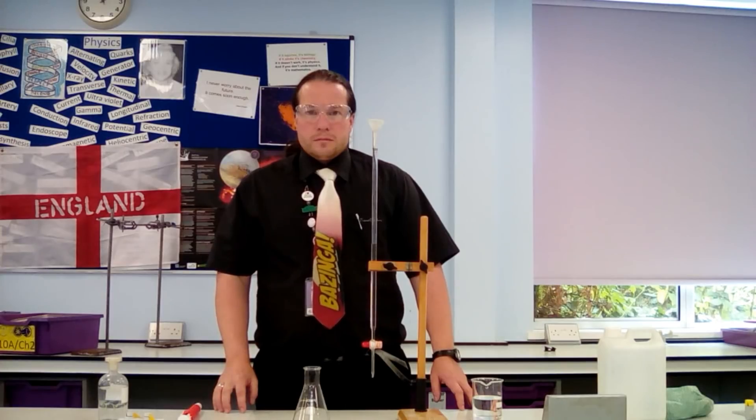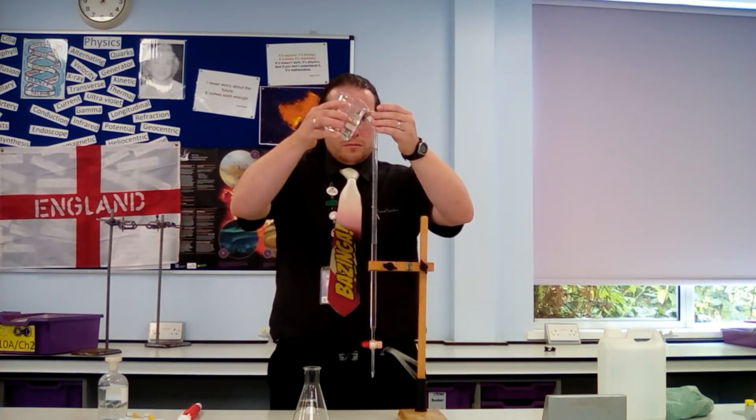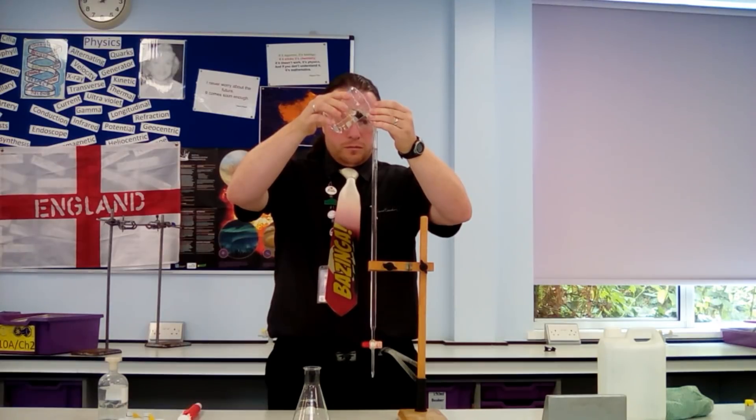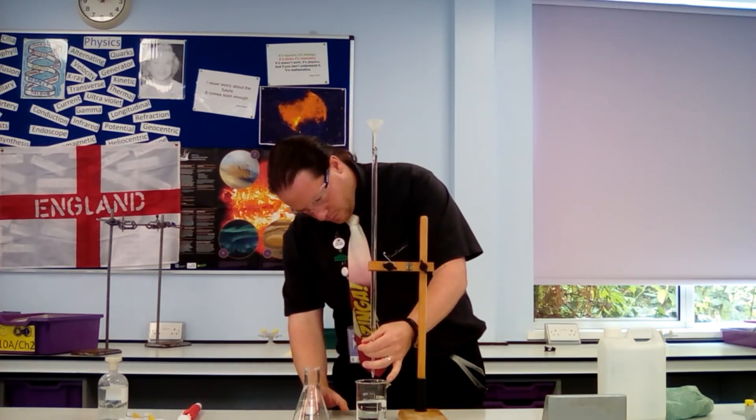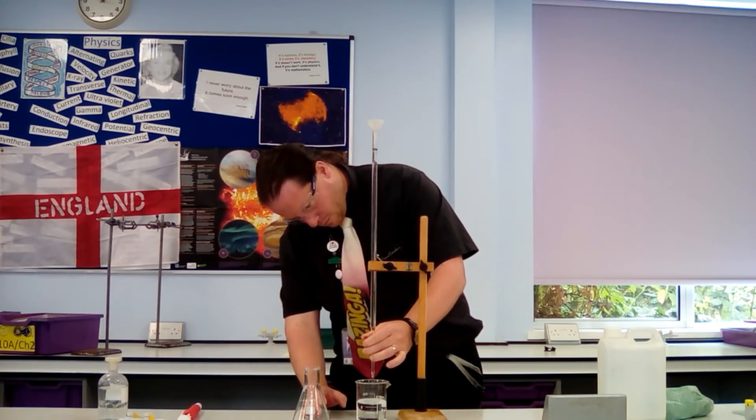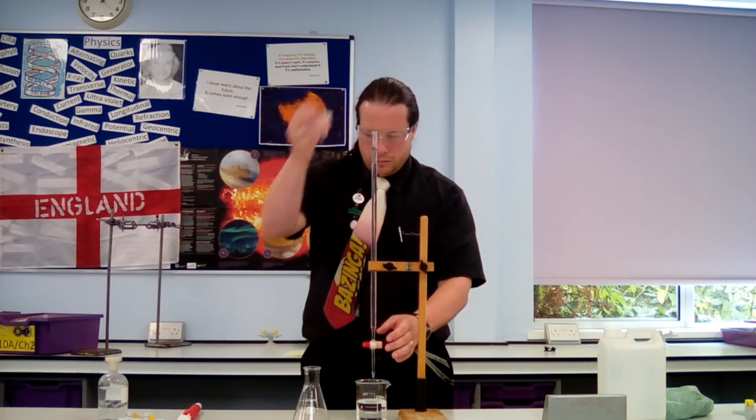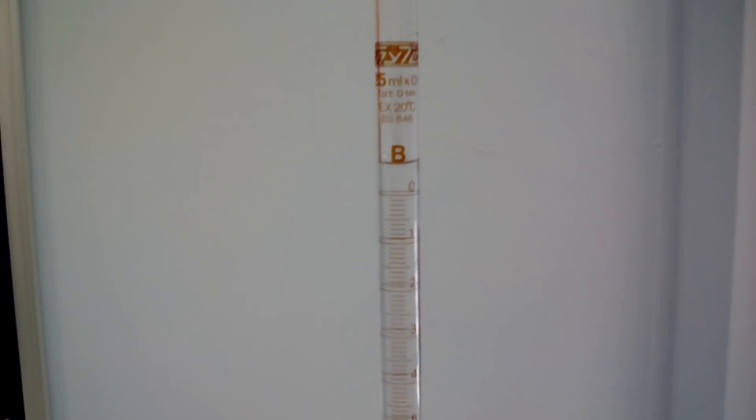We can now add the sulfuric acid to the burette. We've got a small funnel in the top of the burette to aid pouring in. Once the sulfuric acid has reached above the zero line, we can put the beaker below the burette. Now we can drain out the excess sulfuric acid, but first you must remember to take the funnel out of the top.